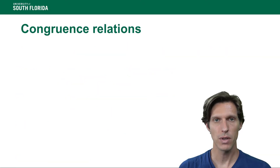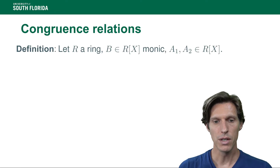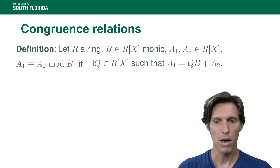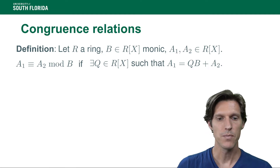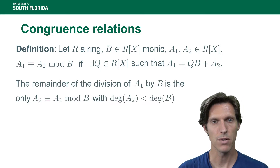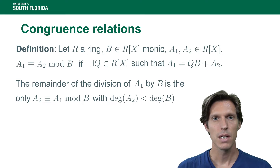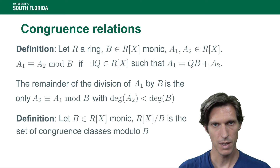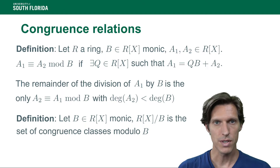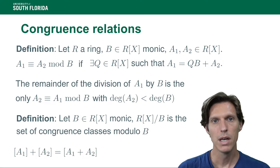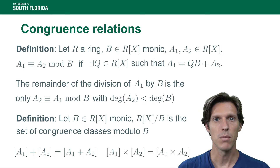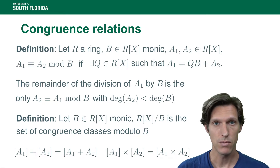We can also define congruence relations in the same way as for integers. Given a monic polynomial modulus b, two polynomials in R[x] are congruent if their difference is divisible by b. The remainder of division is the unique element in the congruence class with degree strictly less than b. We define the quotient ring R[x]/(b) as the set of congruence classes, forming a ring under addition and multiplication of classes.